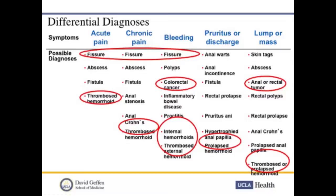This table lists some of the differential diagnoses for patients who might come in with anorectal complaints. We're going to talk about a few things today: hemorrhoids and fissure, as well as rectal cancer.